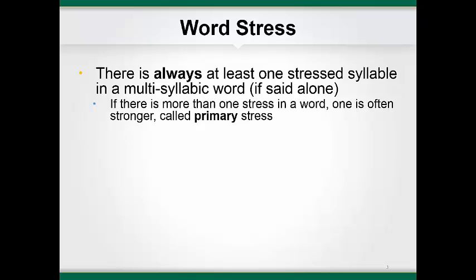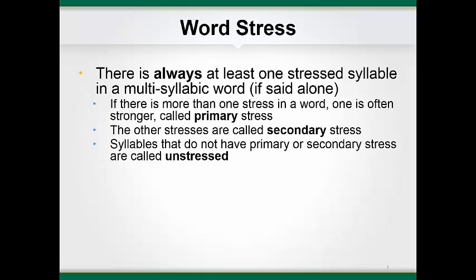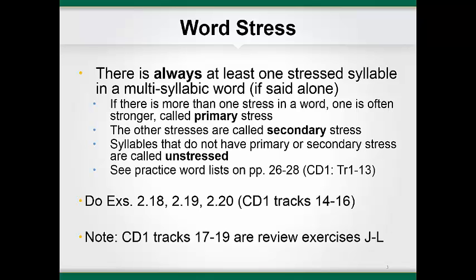In a multisyllabic word, there may be more than one stronger syllable. For example, in the word 'constitution,' the 'con' and the 'tu' syllables are both stronger than the 'sti' and the 'shun' syllables. However, there is usually one syllable that is the strongest. In 'constitution,' the 'tu' syllable is the strongest and the 'con' is the second strongest. Listen: constitution. The strongest syllable is called the primary stressed syllable. The other stronger syllables are called secondary stressed syllables. The weakest syllables are those without primary or secondary stress and are called unstressed syllables.